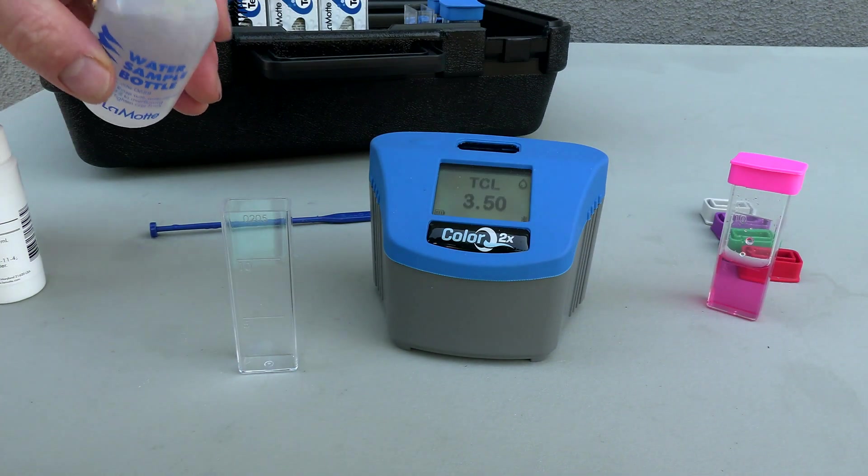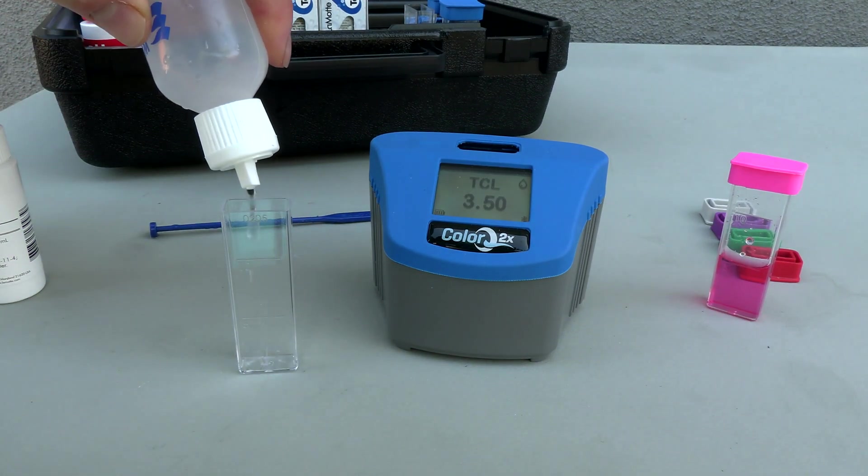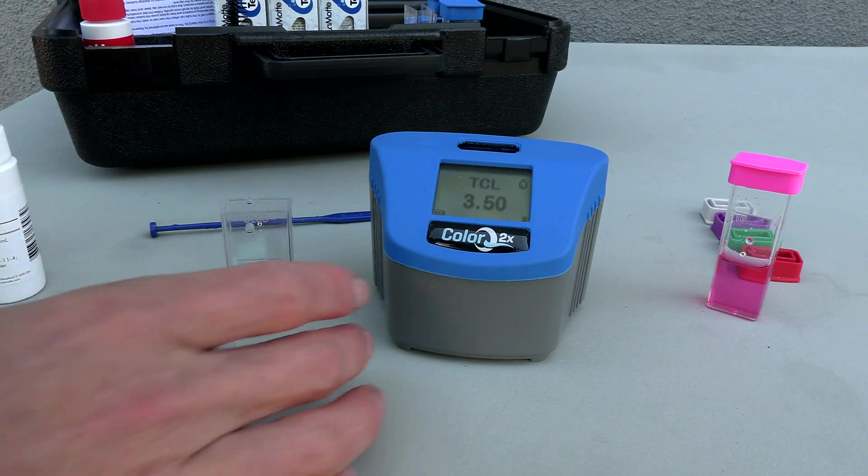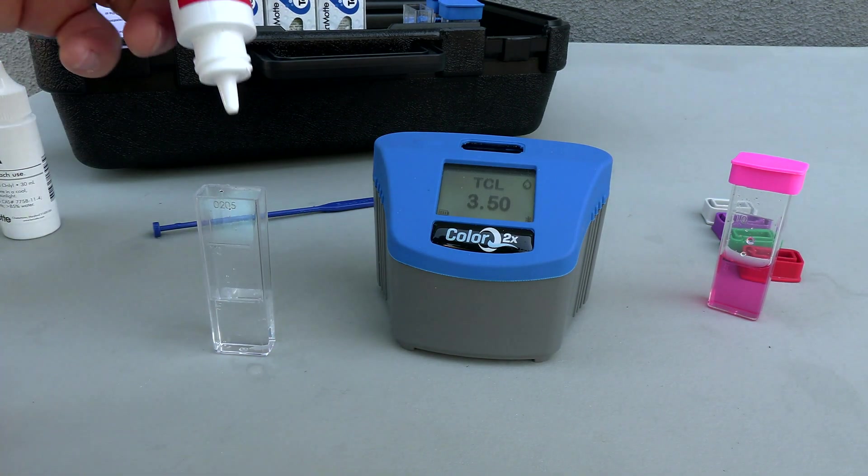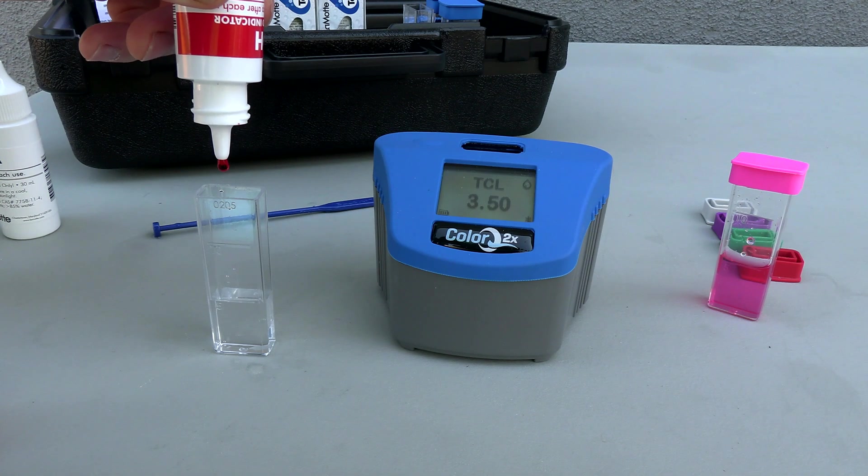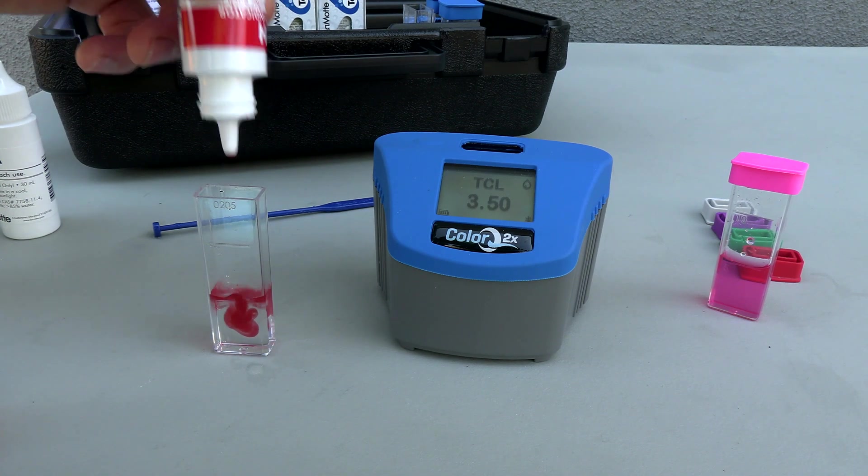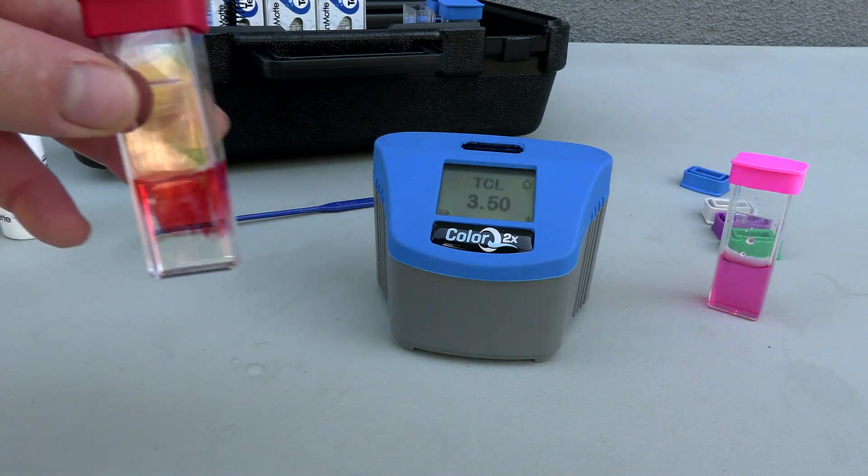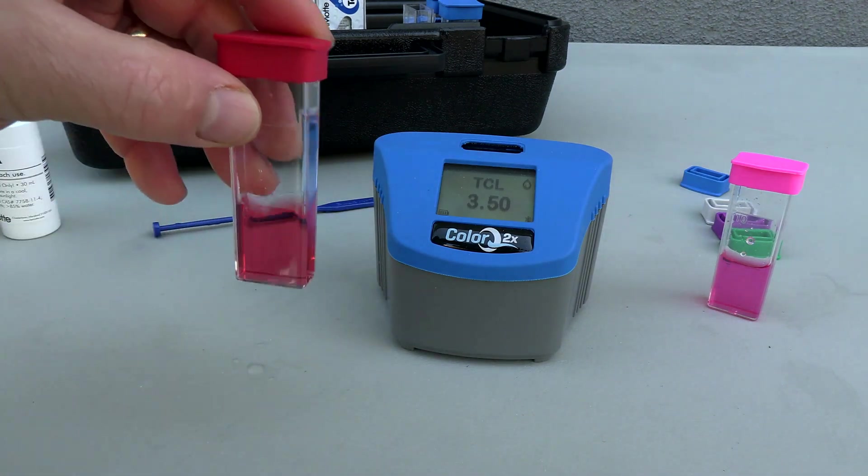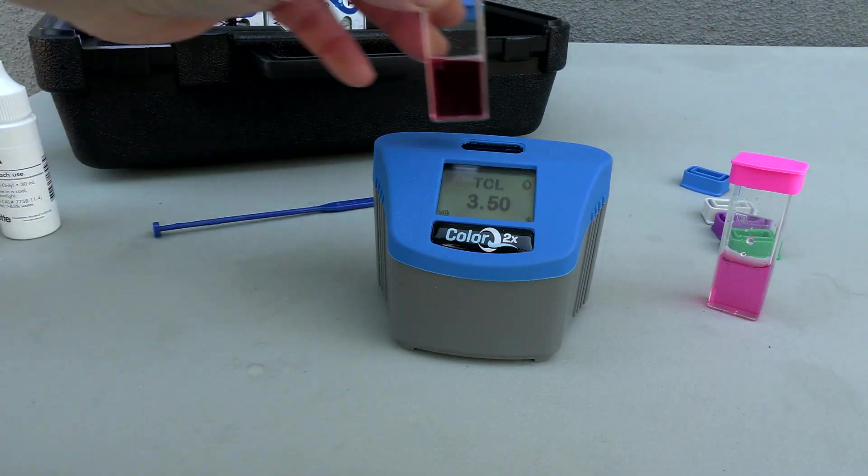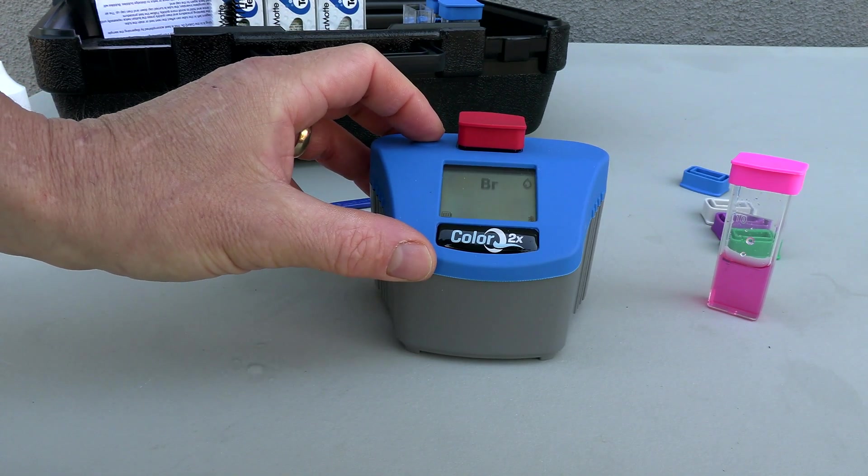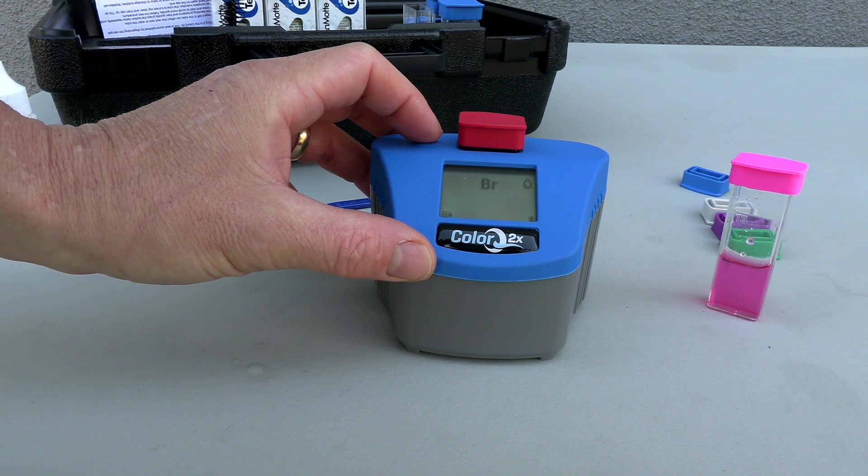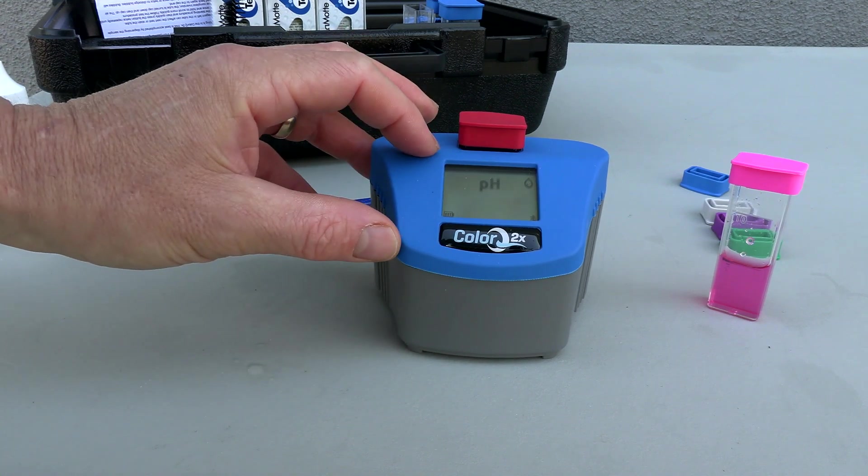Let me go ahead and do the pH. You want to fill the sample up to the 5 ml mark again. For the pH we're going to use the phenol red reagent. I'm going to add five drops, go ahead and put the red cap on and invert it. You see it says bromine here. To skip that, hit this button really quick and then you're at pH. The pH here is 8.1.